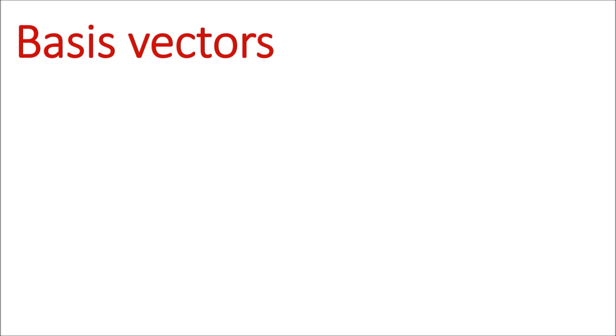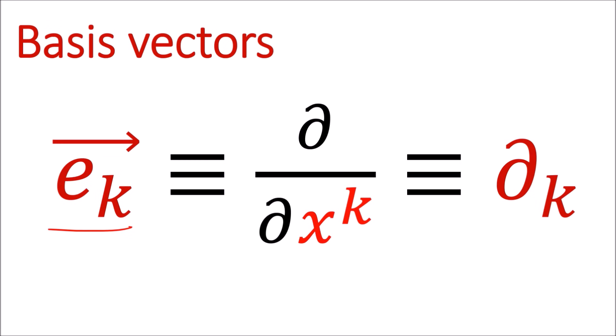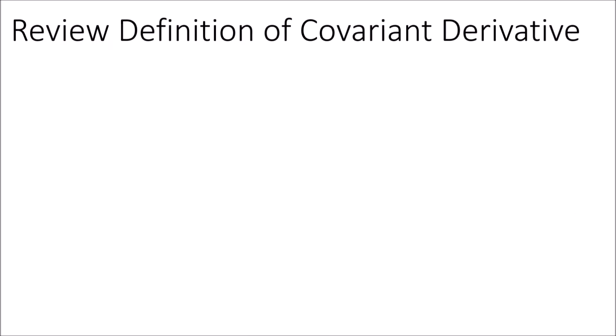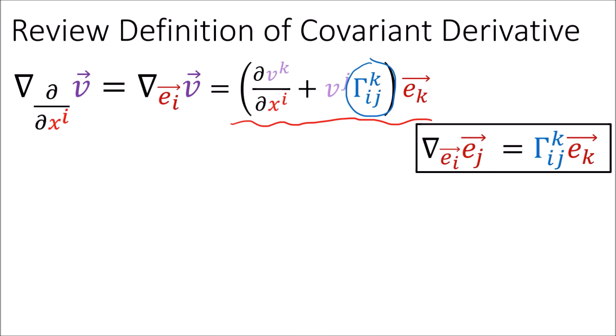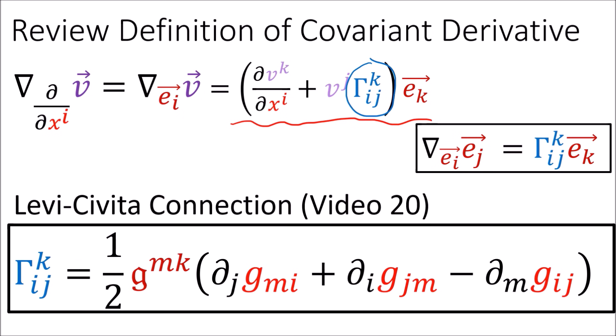Just a reminder, I'll be using any of these symbols to denote basis vectors in this video — these all mean the same thing. The covariant derivative of a vector in a given direction is given by this formula, where these gammas are the connection coefficients. While there are many possible definitions for the connection coefficients, the most common is the Levi-Civita connection, which I covered in video 20.